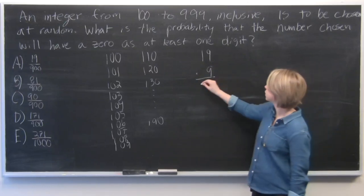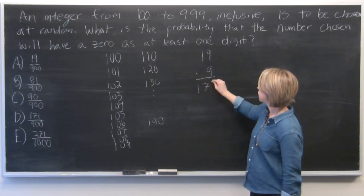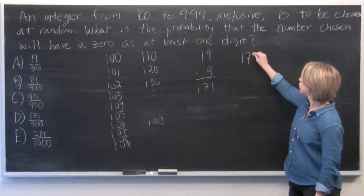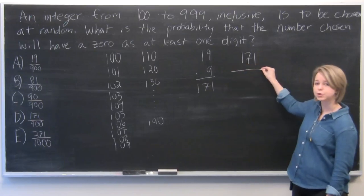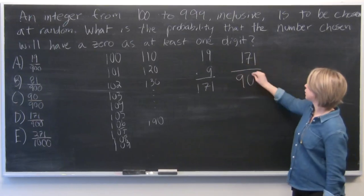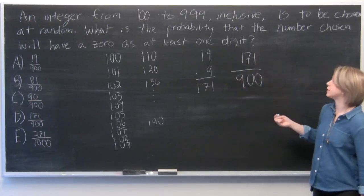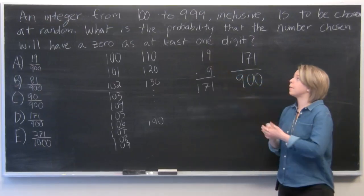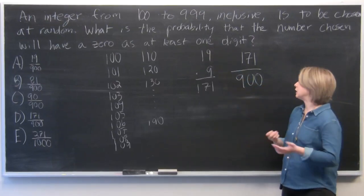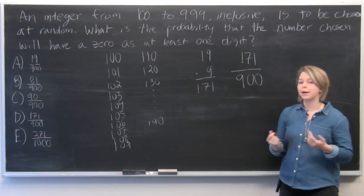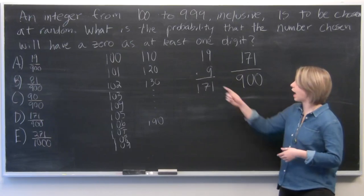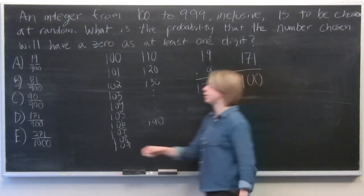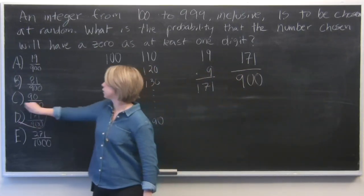And so we know that we have 171 possible choices out of our 900 choices, because 999 minus 100 is technically 899, but because it's inclusive, we add one more. And so our answer choice is D, 171 over 900.